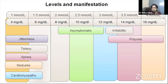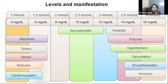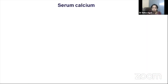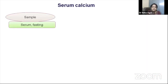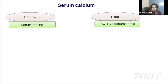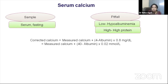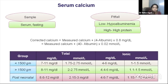High calcium can present with irritability, polyuria (as calcium affects ADH action), hypertension, dehydration, enteropathy, and seizures. Serum calcium should always be collected as an early morning fasting sample. Because calcium is bound to albumin, conditions like nephrotic syndrome or chronic liver disease can falsely lower calcium, while high protein states can raise it. The corrected calcium formula adjusts 0.8 mg/dL per 1 g/dL decrease in albumin.